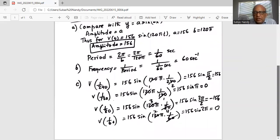What about voltage at 1 over 60? It is 156 sine 120 pi multiplied by 1 over 60. 60 goes into 120 twice. So we cancel the 60 in the denominator. We are left with 156 sine 2 pi. And we know the value of sine 2 pi is 0. So basically voltage at 1 over 60 is 0.